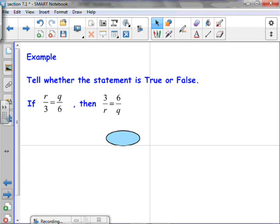I think we've got one more here. Tell whether the statement is true or false. If R over 3 equals Q over 6, then 3 over R equals 6 over Q. What do we do? Well, this is real simple. All we're doing is flipping these top and bottom, flipping these top and bottom to get this. That is true because that was one of our properties we talked about two slides ago.